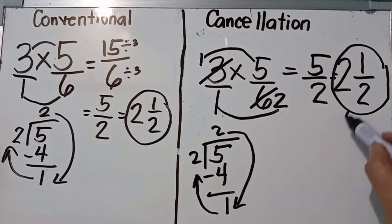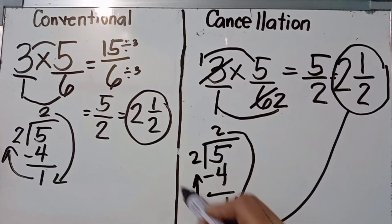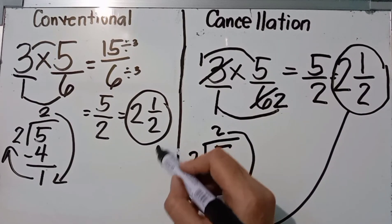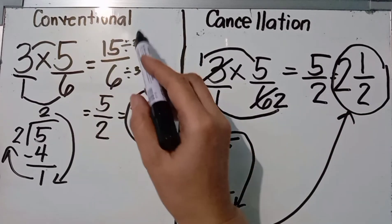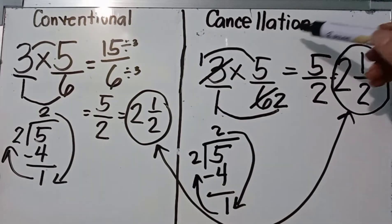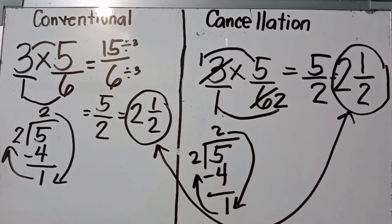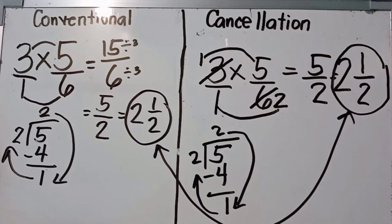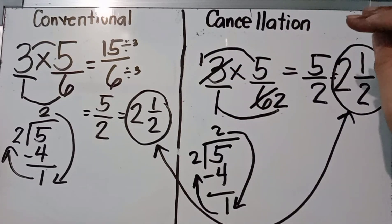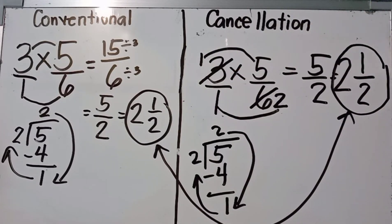As you can see, both methods give the same answer. Using either the conventional method or the cancellation method, you get two and one half. You may use whichever method you prefer — both will give the same result.